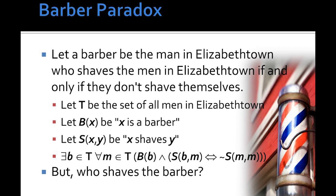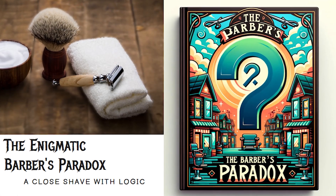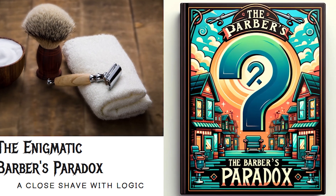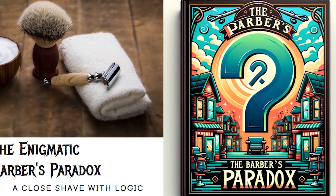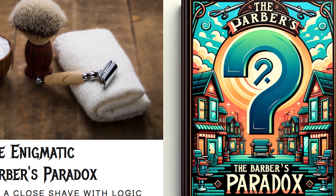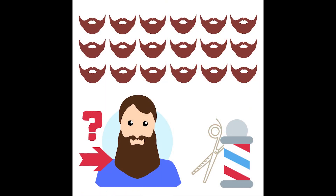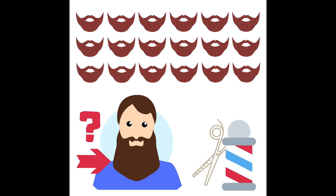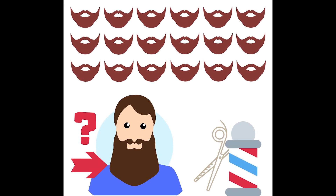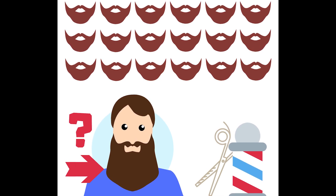The paradox also has philosophical weight. It challenges our assumptions about identity, self-application, and the way language constructs meaning. The brilliance of the Barber Paradox lies in its simplicity — it doesn't rely on advanced math or obscure theory, just one sentence and a bit of imagination. And yet it forces us to rethink how we define rules, how we construct logic, and how language can simultaneously describe and destroy itself.